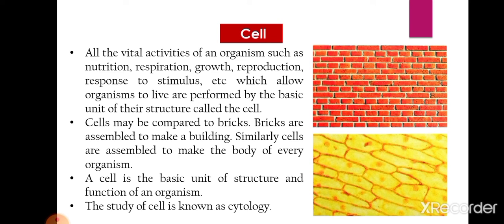Organisms differ in their size — some are microscopic, like bacteria and amoeba, requiring a microscope to see them, while others are macroscopic, like most plants and animals, visible to the naked eye. They differ in appearance: some may be fat, thin, short, or tall; some are brightly colored and some are dull. Their habitats also differ — some are aquatic, some terrestrial, some aerial, and some arboreal.